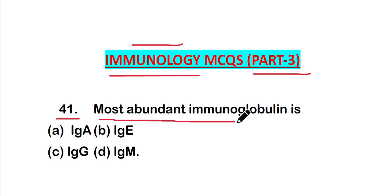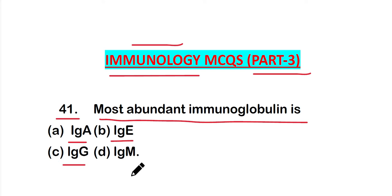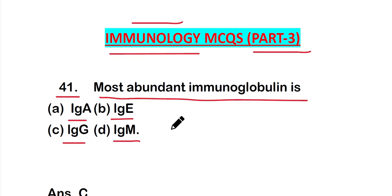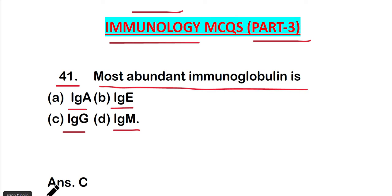Question 41: Most abundant immunoglobulin is option A IgA, option B IgE, option C IgG, or option D IgM. The right answer is option C, IgG. IgG antibody or immunoglobulin is the most abundant in our body.